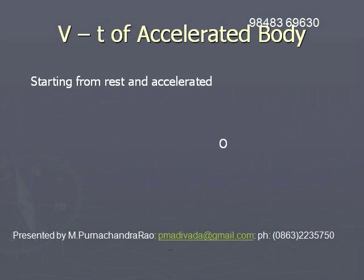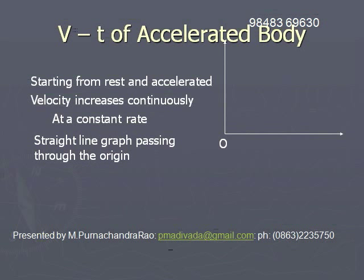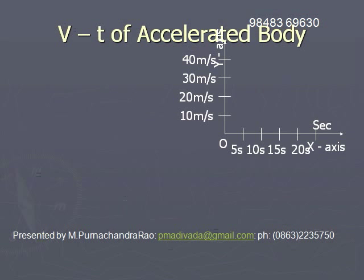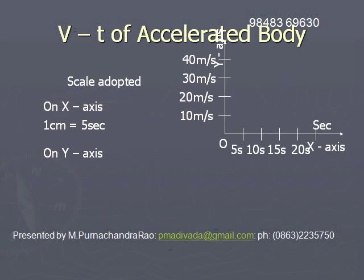Now let us study the velocity-time graph of an accelerated body. Suppose a body starts from rest and is accelerated — its velocity continuously increases at a constant rate. This graph will be a straight line passing through the origin. Time is plotted on the x-axis and velocity on the y-axis, with time in seconds and velocity in meters per second. On the x-axis, one centimeter represents 5 seconds; on the y-axis, each centimeter represents 10 meters per second.